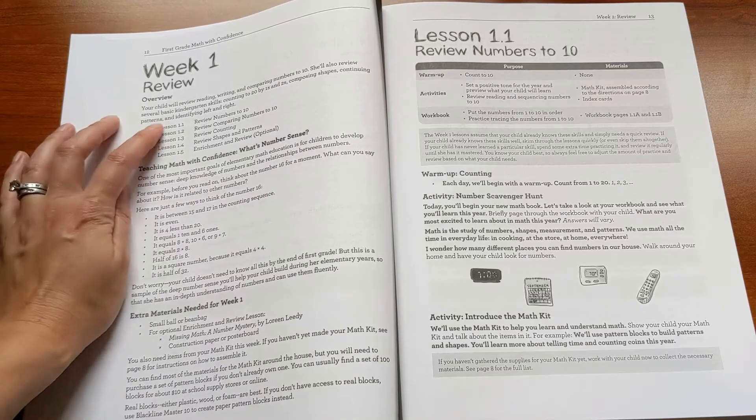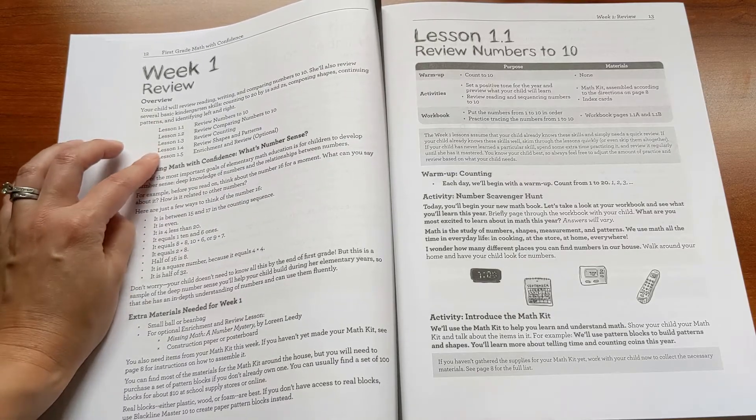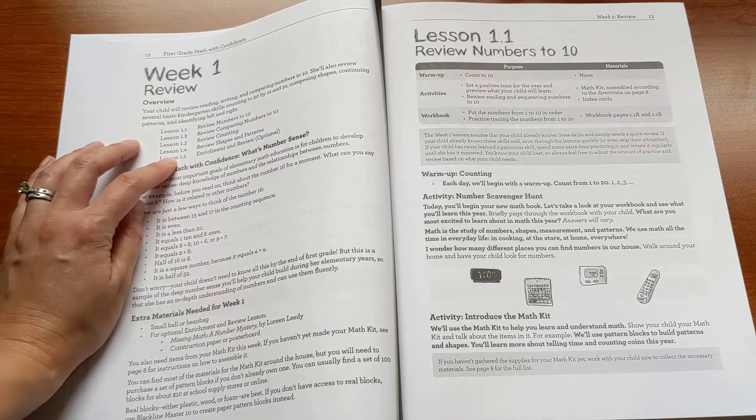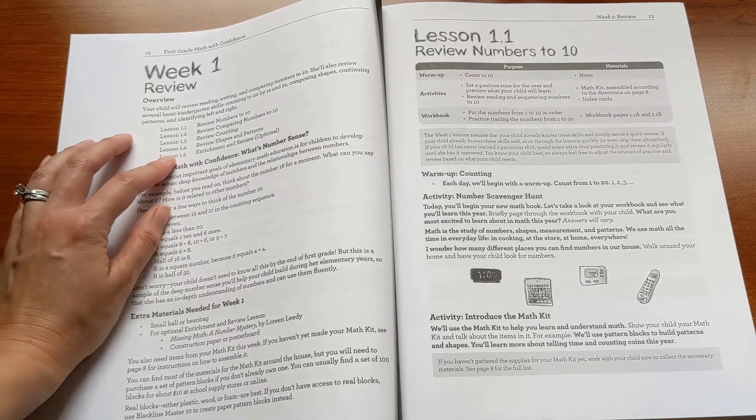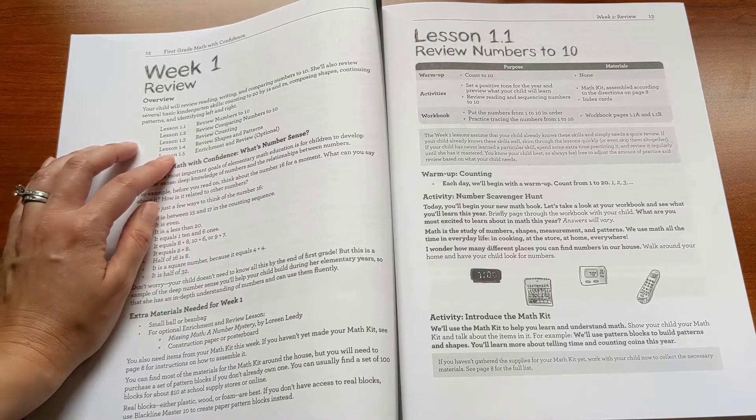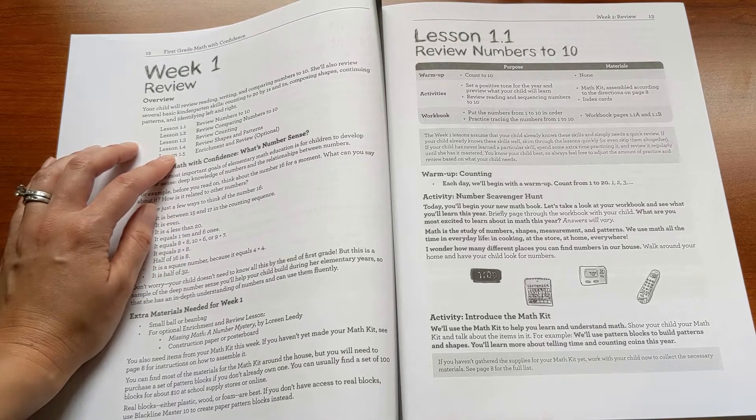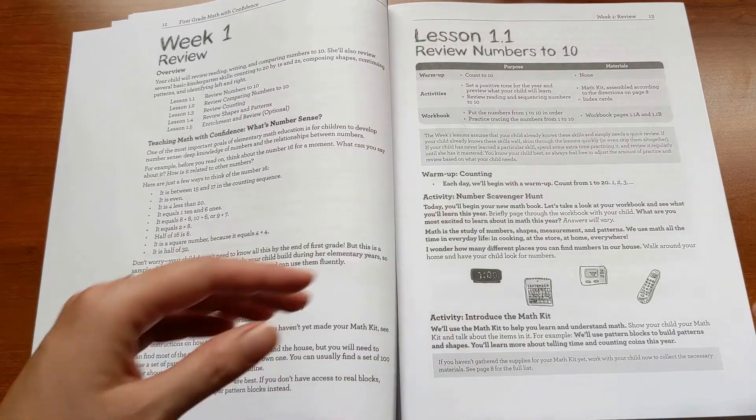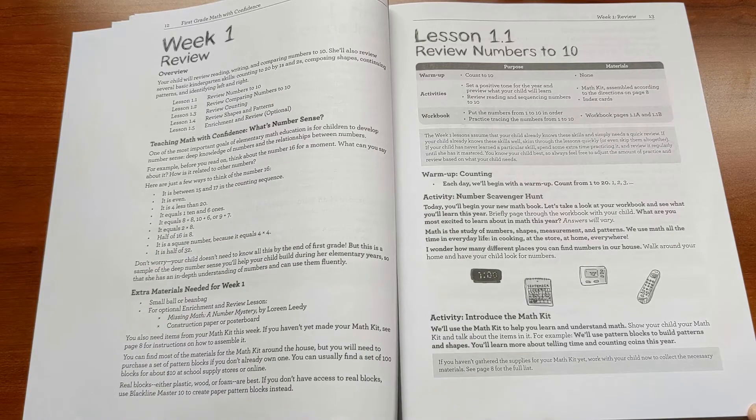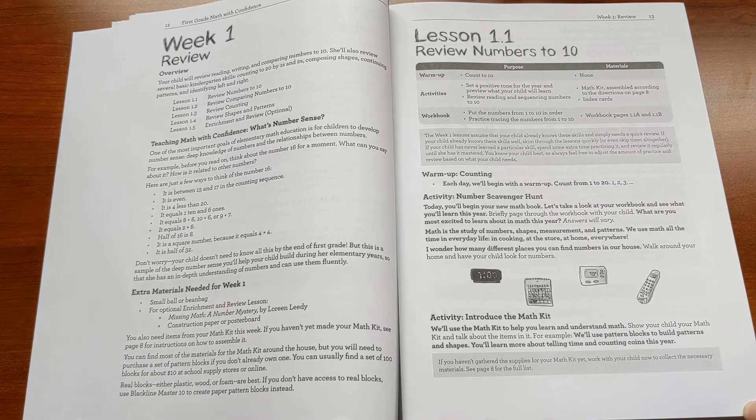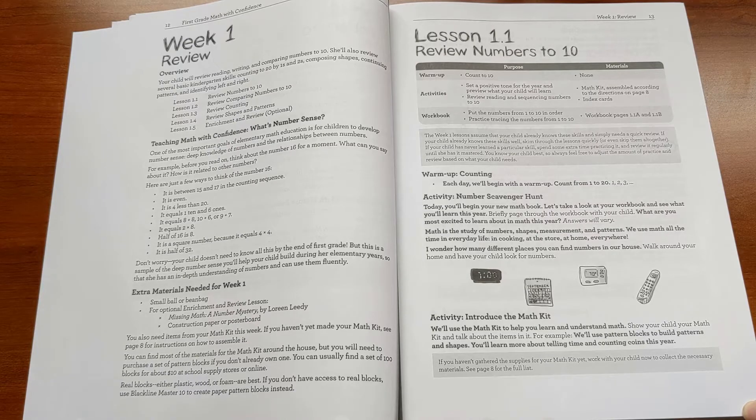So each week has five lessons—four of them are required core lessons, and then one is an optional enrichment lesson. A lot of families find that they're really fun, their kids love doing them, and they're a really enjoyable part of the program, but if you don't have time for them that's perfectly fine. Each lesson should take you about 20 to 25 minutes total, and that's including about 10 to 15 minutes of parent-teacher time, and then 5 to 10 minutes of the student completing the workbook.